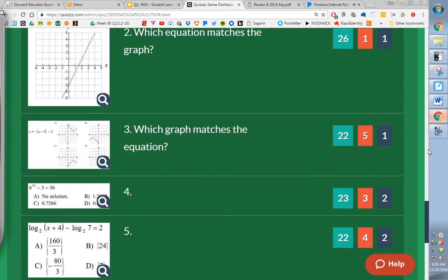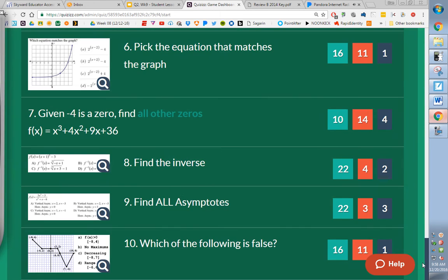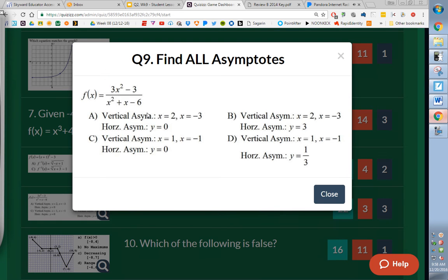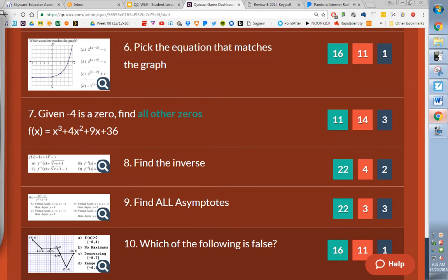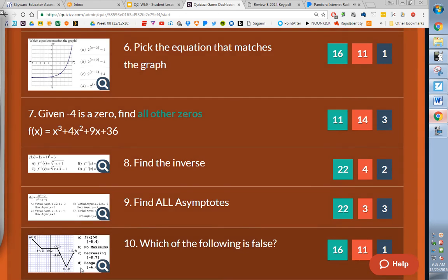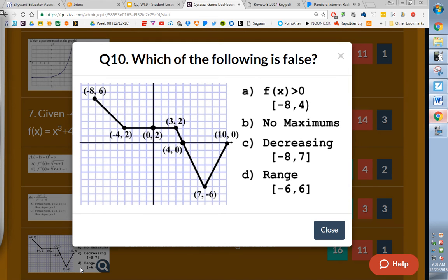Number 8. We found the inverse. Looks like we're doing better with that one after yesterday, which is good. Find all of the asymptotes. Set the bottom equal to 0 to find the vertical asymptotes. Look at the degree of the top and bottom to find the horizontal. We weren't too bad at that one either. Last one we weren't great at. Which of the following is false? Question? Which of the following is false?